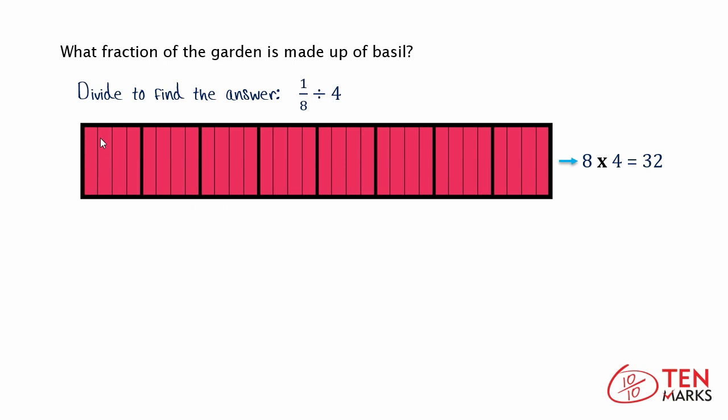which makes sense because eight sections partitioned into four equal sections gives you 32 pieces. If we say that this piece right here is the piece of Lucy's garden devoted to basil, then you see that 1/32 of the garden is made up of basil, or one out of the 32 total pieces is where Lucy grows her basil.